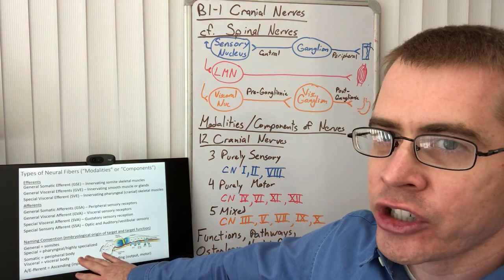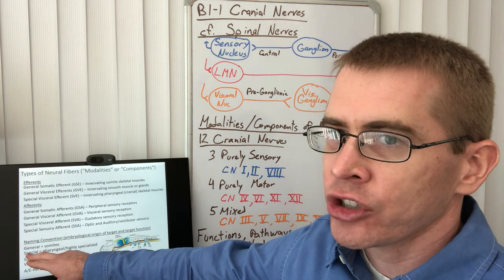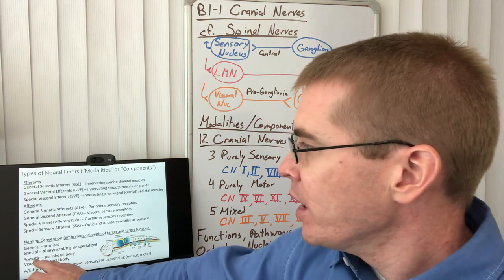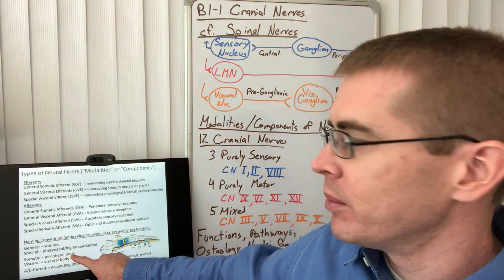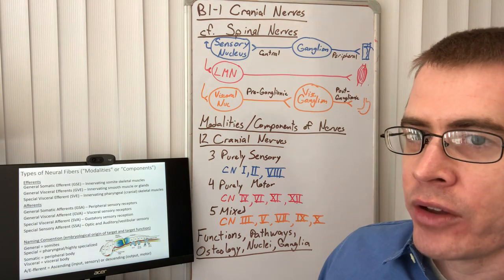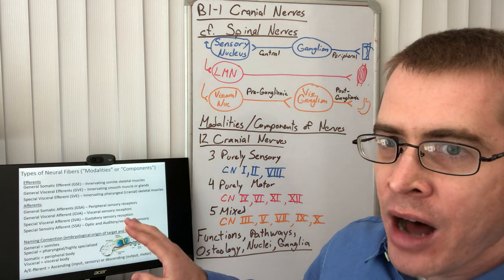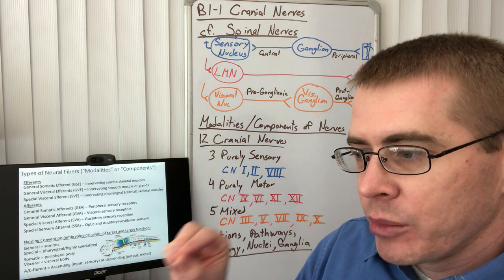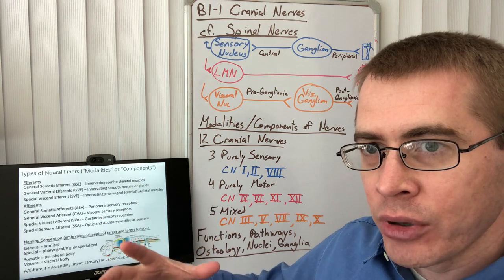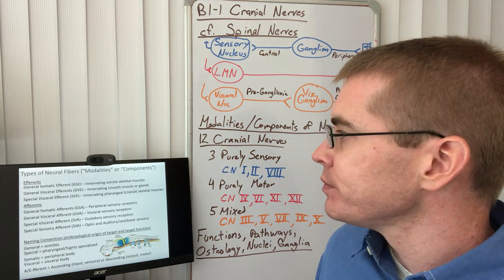Here are the naming conventions: if it's 'general,' it's derived from a somite; if it's 'special,' it's derived from the highly specialized pharyngeal structures of the head and neck embryologically. If the second word is 'somatic,' it's talking about the peripheral body; if 'visceral,' it's talking about the visceral body. Afferent and efferent refer to whether it's an input/sensory component or an output/motor component. The autonomics are termed visceral efferents because they output to a visceral organ such as smooth muscle or glandular tissue.